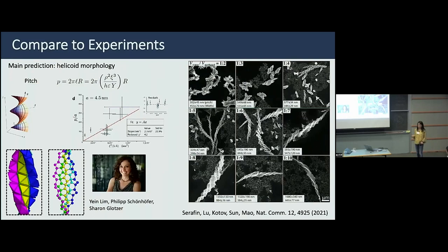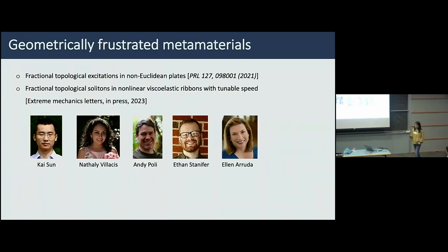Now I'd like to talk about a related set of recent work: how the same type of geometric frustration can be used to make interesting mechanical metamaterials. Specifically, we studied fractional topological soliton excitations in non-Euclidean plates. The theory part was done in collaboration with Chi, and the experimental part with Alan Arruda's group at U of M. To explain the motivation, let's revisit the broader picture of different types of geometric frustration.